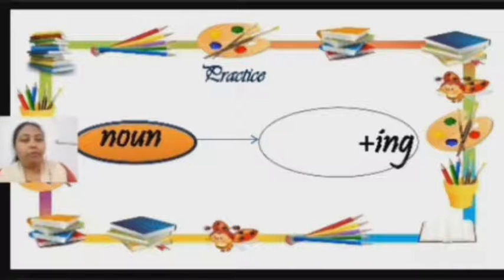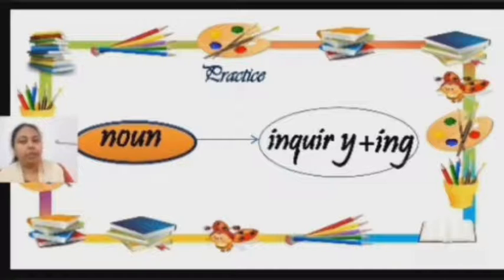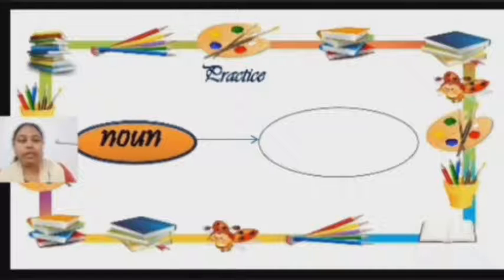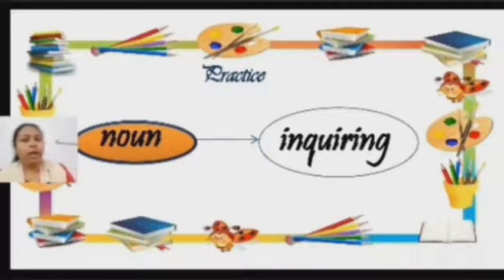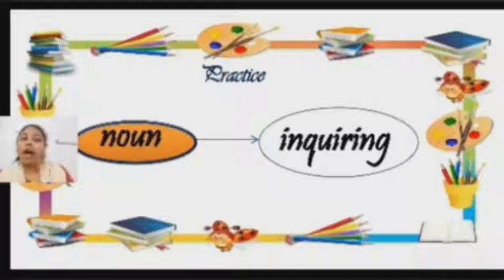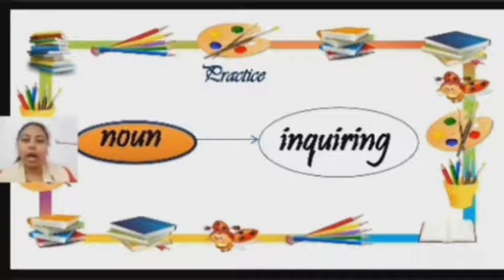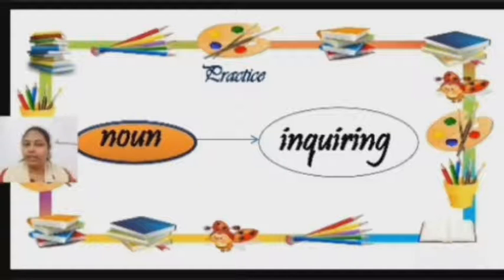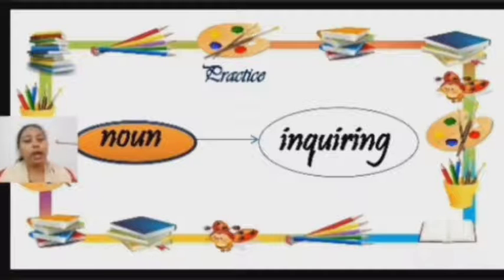But do you remember, whenever 'y' comes at the end of a word that is a noun, we need to replace it with 'i'. But over here, as we are adding '-ing' to this word, we don't need to add one more 'i' in place of 'y'. So the spelling remains as I-N-Q-U-I-R-I-N-G.